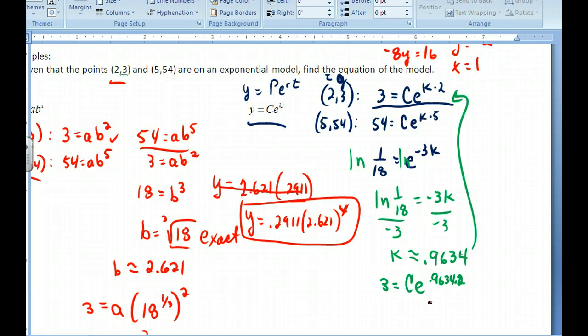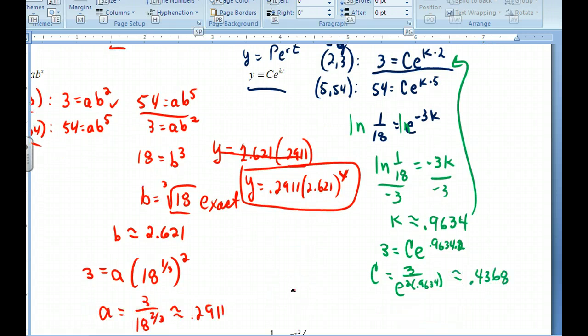And so now we can go ahead and solve for C. C is going to equal 3 divided by e^(2 times 0.9634). And you put that in your calculator. Now when I look at these equations, I know that I did something wrong. C is my initial value because if I plug in t = 0, that will give me my C value. My a value is also my initial value because that would be when x = 0. So I did something wrong. They should be exactly the same.